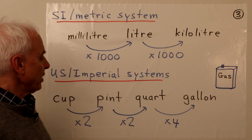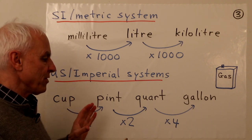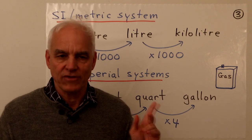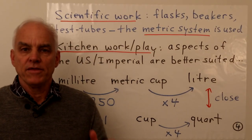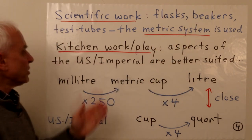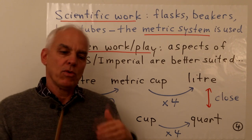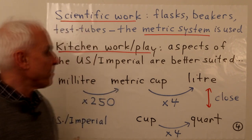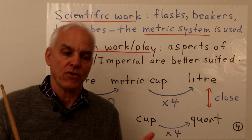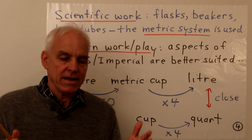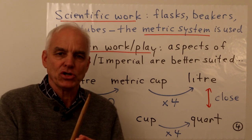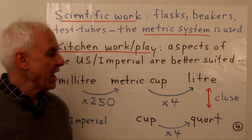These are the two systems we conveniently use, though there is a little overlap and some extra complexity to cover at a future point. For scientific work around the world, the metric system is almost exclusively used — all flasks, beakers, and test tubes are calibrated with the SI system. However, in the kitchen, cooking recipes and baking are often better served by the somewhat larger, more manageable units of the US or imperial system.